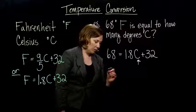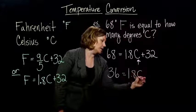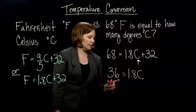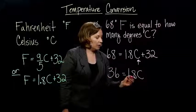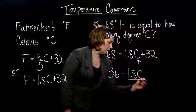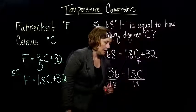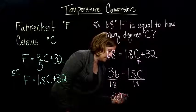I end up with 36 equals 1.8 C, because when we take away 32 from this side, it makes this guy go away. And 68 minus 32 gives me 36. All right? And then the last thing I have to do, I want the C by itself, so I have to divide by the 1.8 on both sides. And believe it or not...